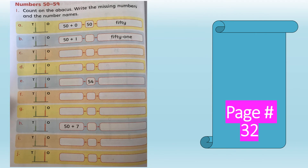Now let us start with page 32 of your Countdown book. The question says: count on the abacus, write the missing numbers and the number names. On this page we learn numbers from 50 to 59, with parts A to J. In part A, there are no beads in the ones rod and five green beads in the tens rod — five tens means fifty plus zero ones, which makes fifty. The number name is F-I-F-T-Y, fifty.